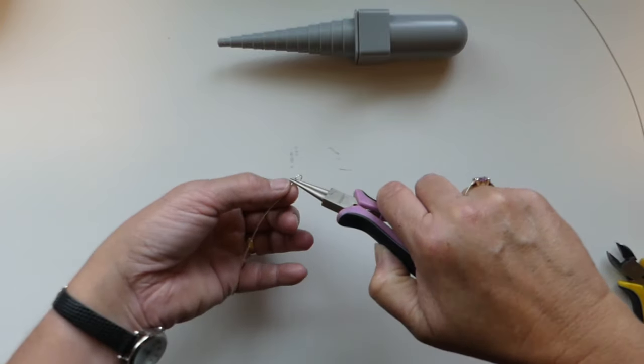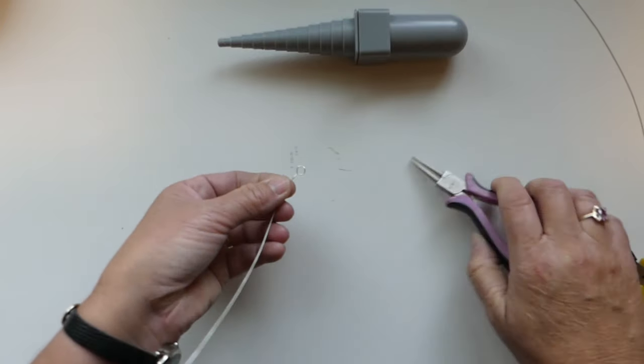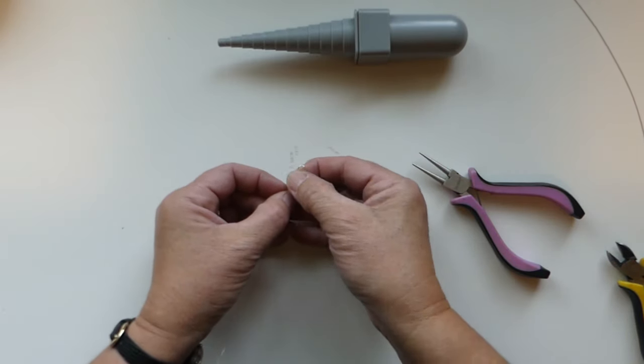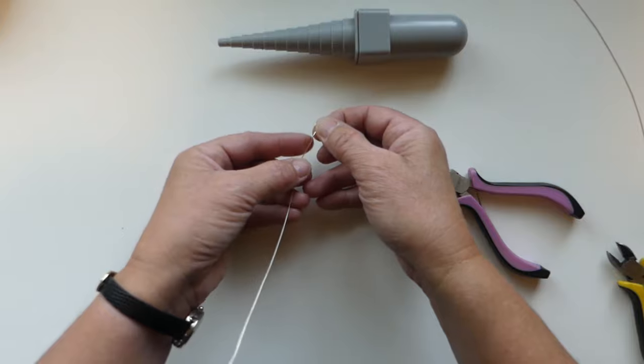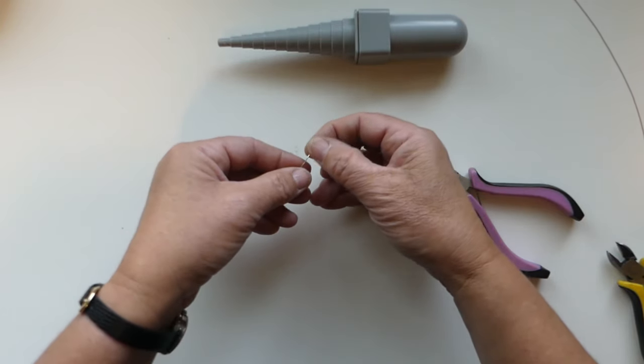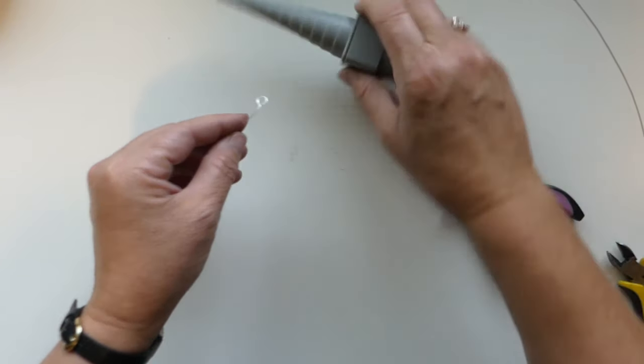And then we want to take it and we want to just give it a sharp bend just to straighten that out, so that you end up with this really great little bail, this really great little loop. Straightening this out, and then what we're going to do is we're going to take our mandrel.